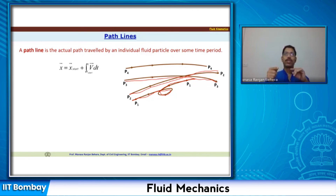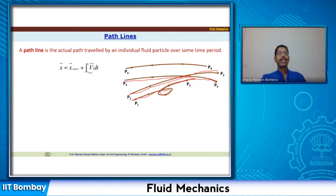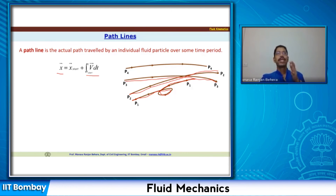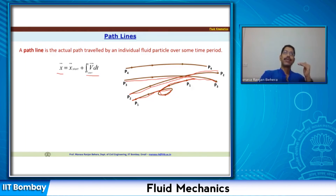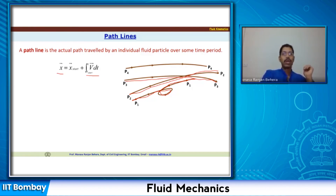Mathematically, starting from an initial position, we find the velocity and use it to find the new position. The new position is x = x₀ + ∫(from t₀ to t) V dt. Integrating over time gives the displacement, yielding the new position. We can keep tracking the position throughout the particle's movement.